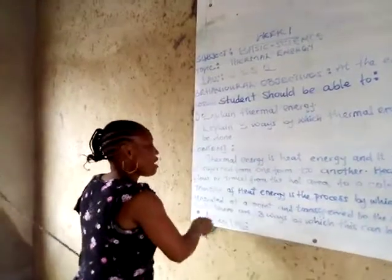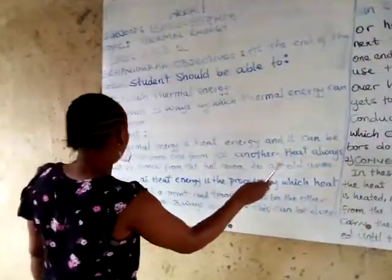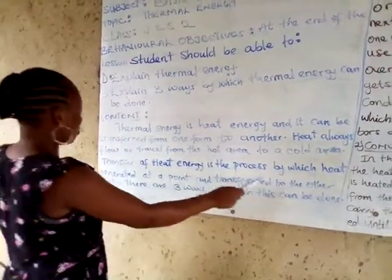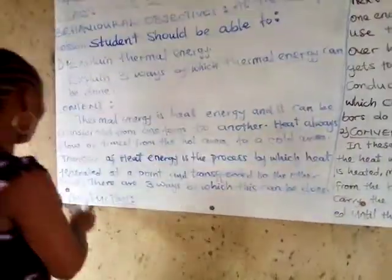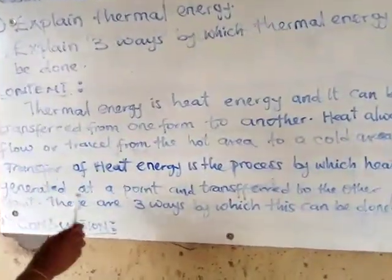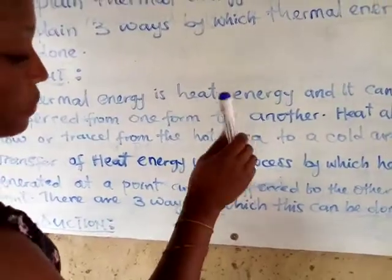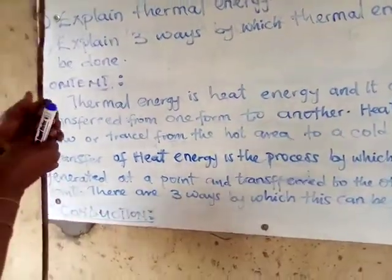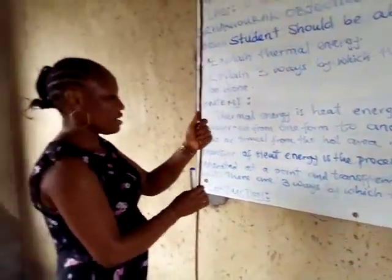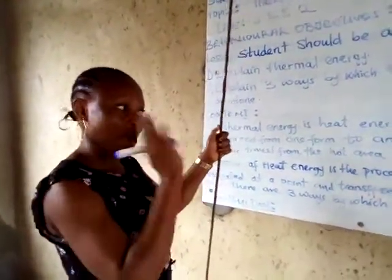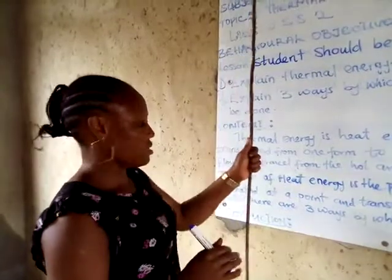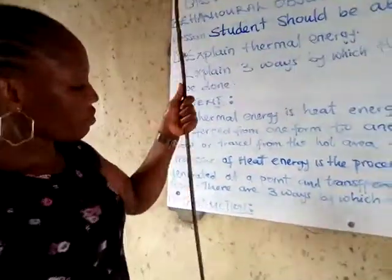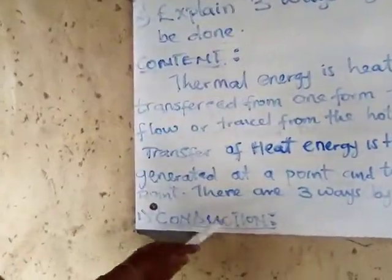Transfer of heat energy is the process by which heat is generated and transferred. There are three ways by which this can be done. This thermal energy can be transferred in three ways. The first one is conduction.